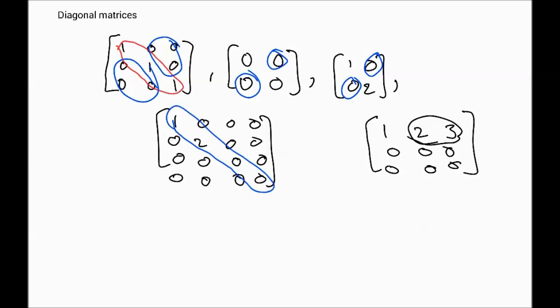In this example, the only nonzero entries are on the diagonal. It's important to note that zero matrices are also diagonal matrices, and all identity matrices are diagonal matrices as well. On the other hand, the presence of numbers like two and three off the diagonal disqualifies a matrix from being diagonal, because the entries below and above the diagonal must be zero.